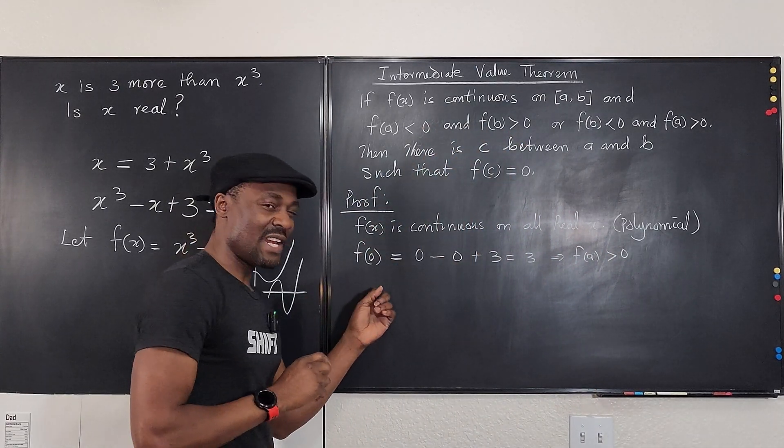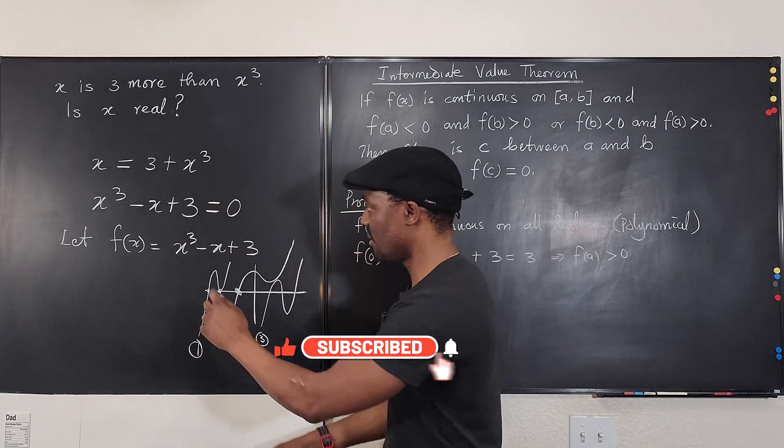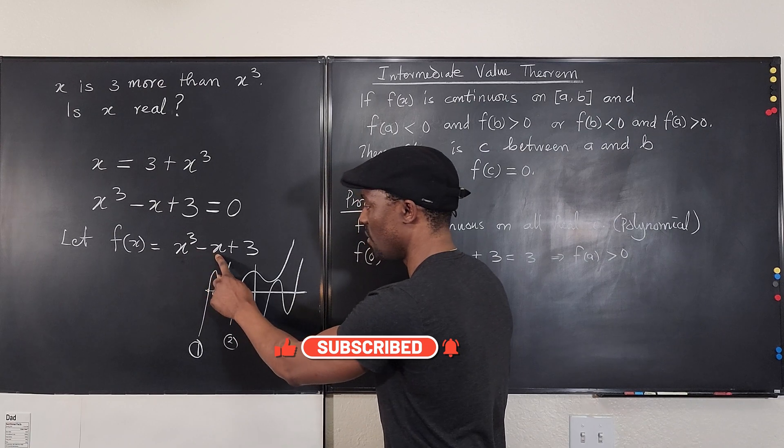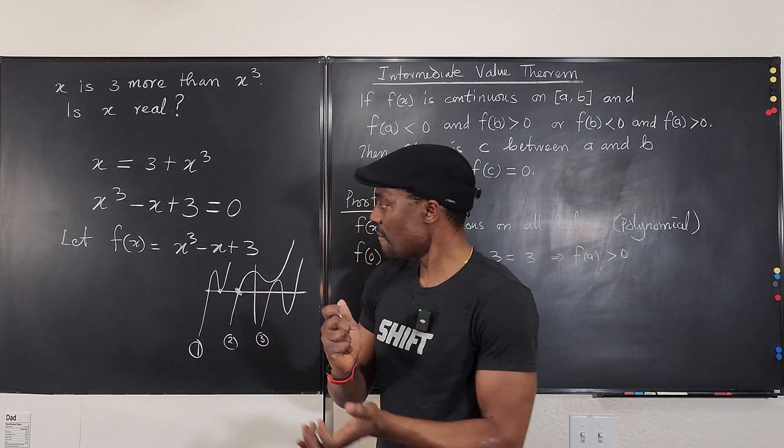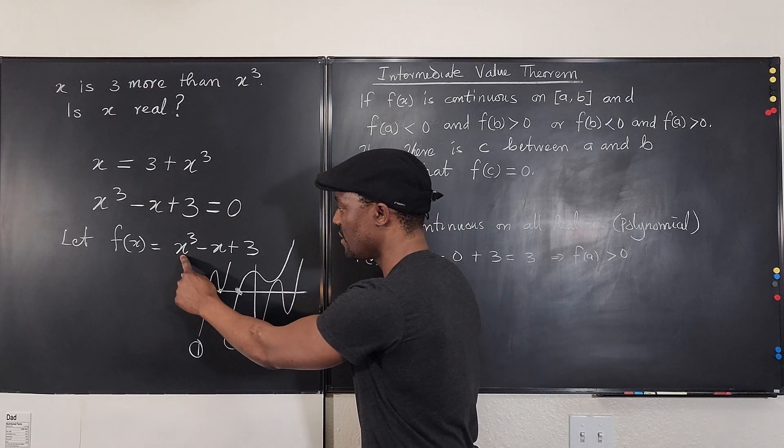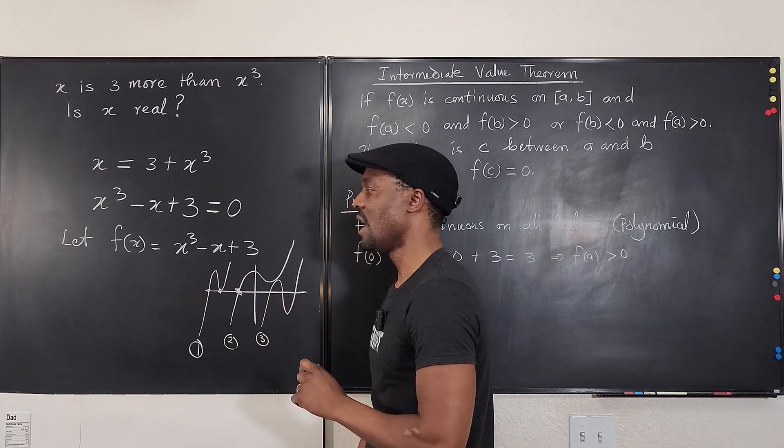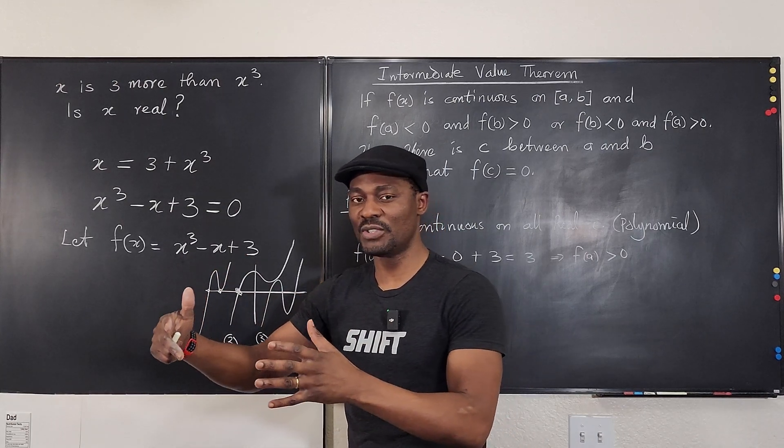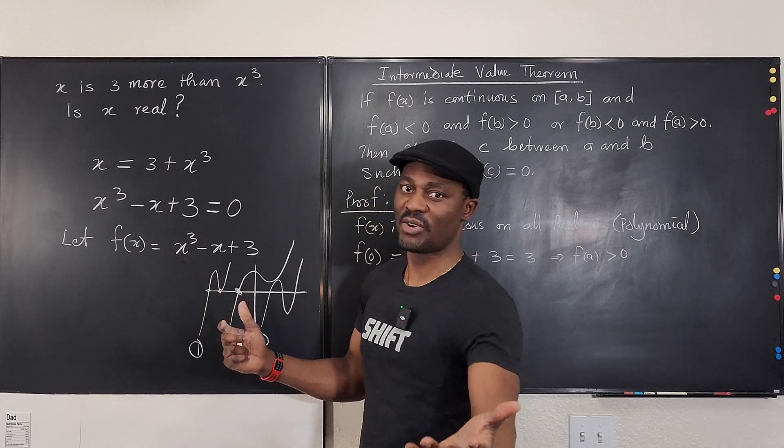Now let's try and plug in another number. Easy numbers. Plug in one. If we plug in one here, it's going to be one minus one, that's zero plus three. No, it's still positive. Let's plug in two. Eight. No, that's eight minus two, that's six plus three, that's nine. So you notice that if you keep adding, using positive numbers, you're going to end up with positive. So let's try a negative number.